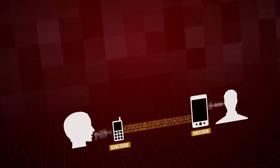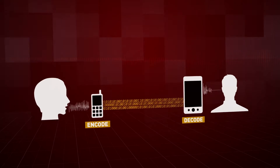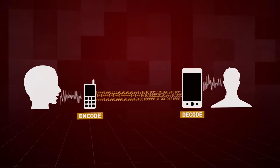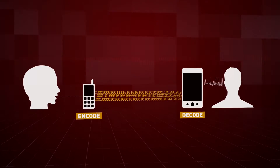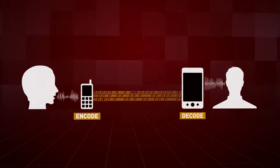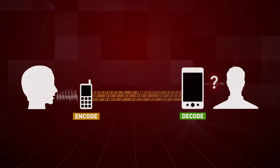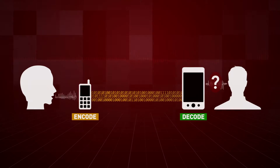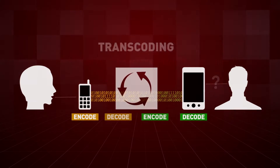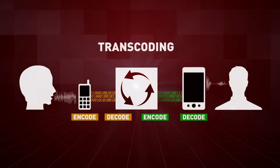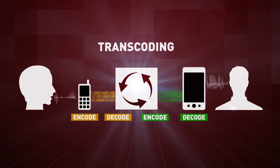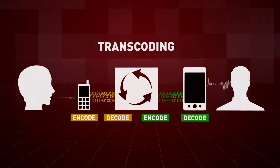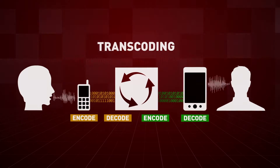Typically, both the sending device and receiving device use the same codec, but more frequently in today's disparate networks, devices cannot connect properly due to incompatible codecs. The solution is what we call transcoding, which converts the bitstream from one encoding standard to a different encoding standard.